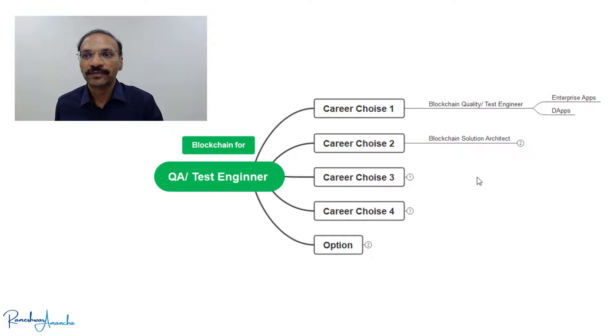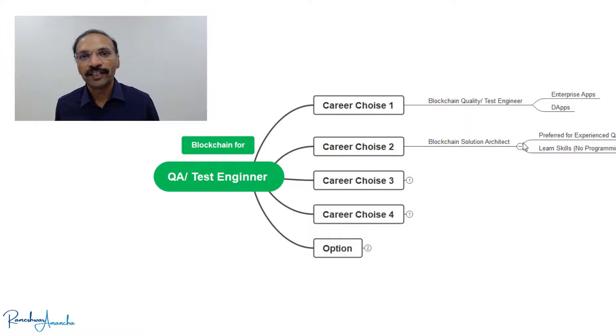The second choice is you could become a blockchain solution architect. You might be thinking this might need a lot of programming skills or a lot of knowledge. Not really. You can be a blockchain solution architect.